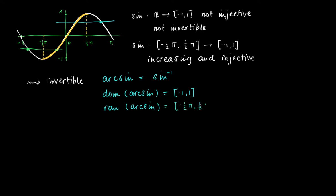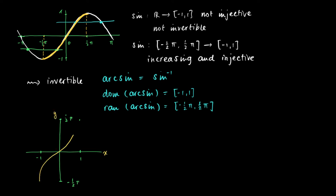Now look at the graph of the arc sine. Looking at the x and y axes, this is the curve we get by reflecting the graph of sine of phi in the line x equals y.